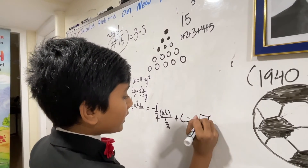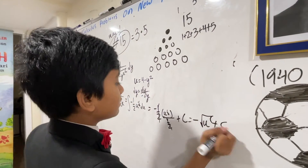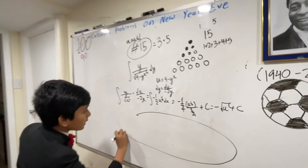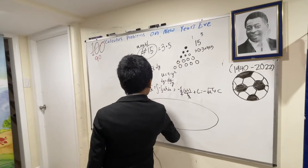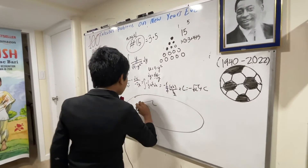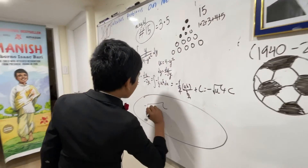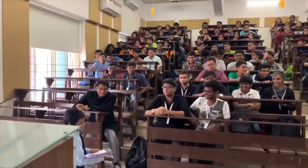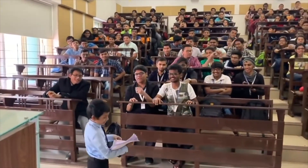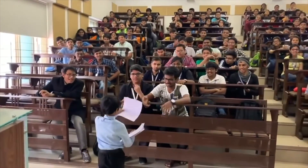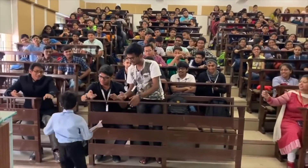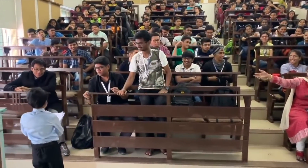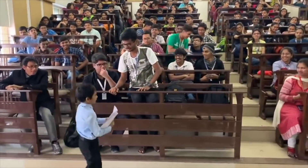The two halves cancel, leaving us with negative root u plus C. Substituting back, we get negative root of four minus y squared plus C. And that's the answer!